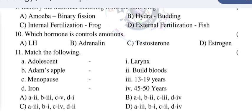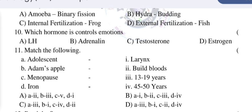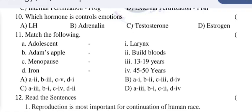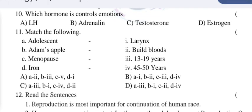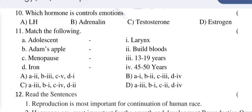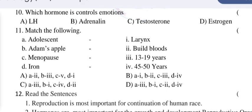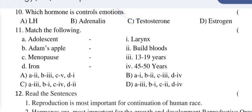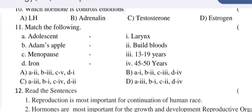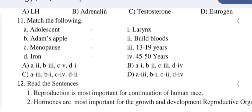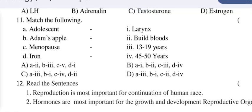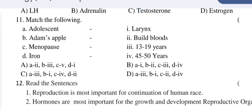Options: Amoeba — binary fission; Hydra — budding; internal fertilization — frog; external fertilization — fish. Which hormone controls emotions: LH, adrenaline, testosterone, estrogen? Number eleven: Match the following — adolescent, Adam's apple, menopause, iron. On the other side: larynx, builds blood, 13 to 19 years, 45 to 50 years.